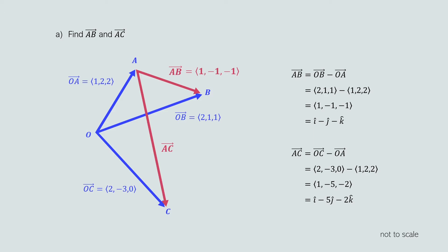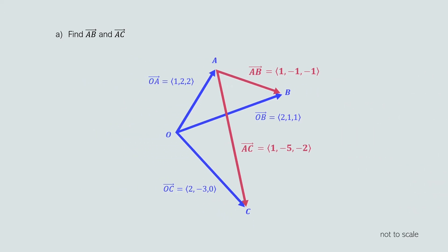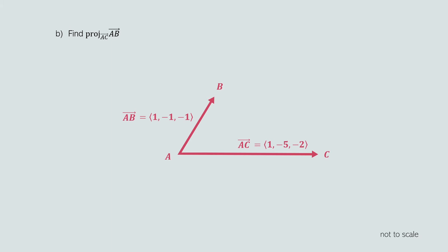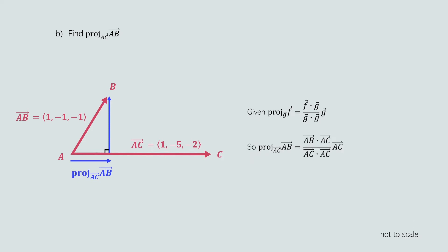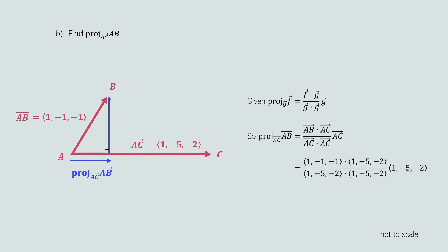Part (b) requires us to find the vector projection of AB onto AC. Using the formula, the vector projection of f onto g equals f dot g over g dot g times g, therefore the vector projection of AB onto AC equals AB dot AC over AC dot AC times AC. We already know AB equals (1, -1, -1) and AC equals (1, -5, -2), so we substitute each vector into this equation.